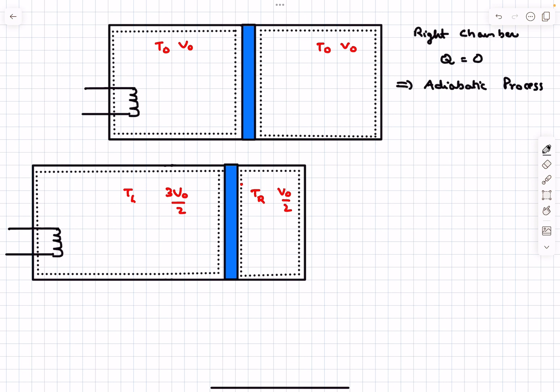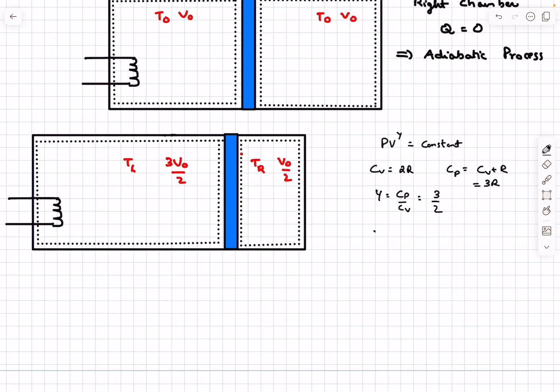For the first question we have to determine the value of TR. We can use the equation for an adiabatic process: PV^γ is a constant. The value of CV was given to be 2R in the question, so we can find CP using Mayer's relation: CP = CV + R = 3R. This means γ = CP/CV = 3/2.